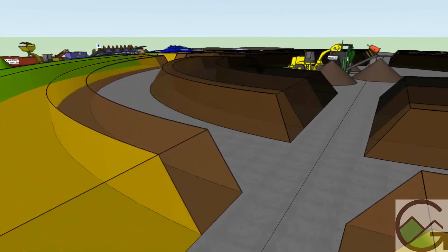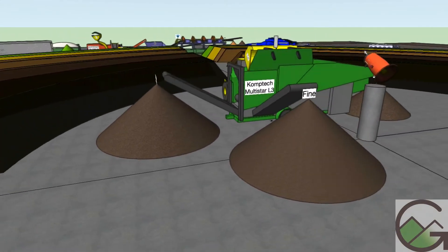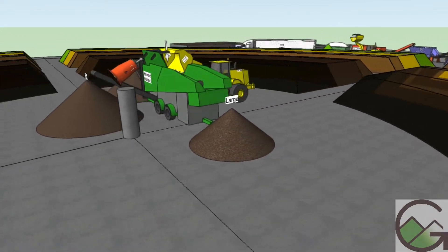The finished compost fines are trucked to the sales yard and the overs go back into the composting process as a bio cover. The misting system keeps the dust down during screening and turning.